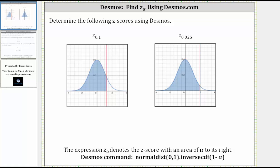This video will show how to determine Z sub alpha using Desmos.com, where Z sub alpha denotes the Z-score with an area of alpha to its right.